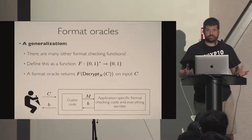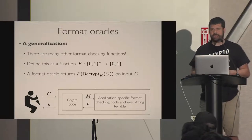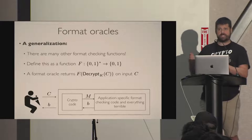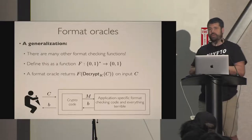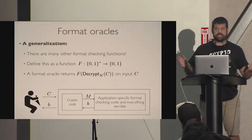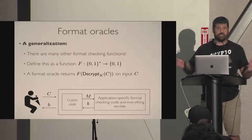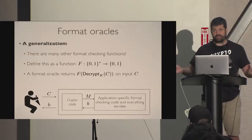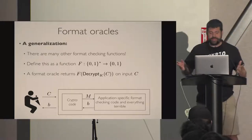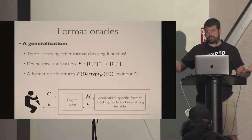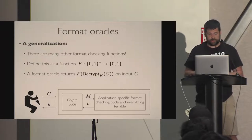There is a generalization of this called the format oracle attack. It's the same idea, except now we replace that padding check function with an arbitrary predicate that says: look at whatever it is about this decrypted message and tell you whether it's valid. We define this as an arbitrary function f. The basic idea is a format oracle does decryption, evaluates this function, and then tells you whether or not things worked.